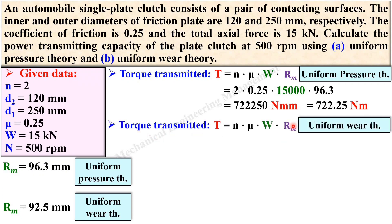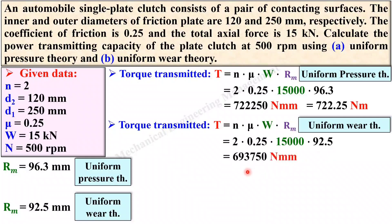Now find the torque using the uniform wear theory. Put the values: n = 2, μ = 0.25, W = 15,000 N, and r_m = 92.5 mm. Simplify to get the torque in N·mm, then convert to N·m by dividing by 1000. This is the torque by uniform wear theory.